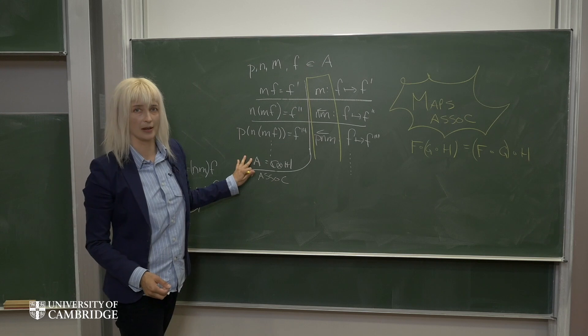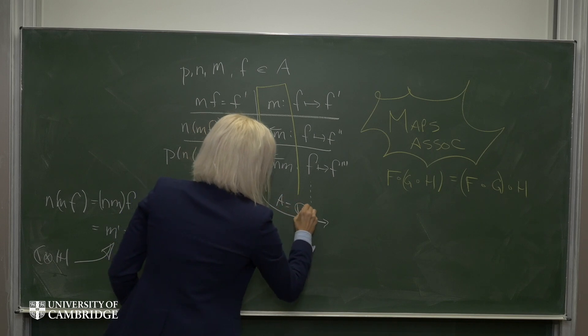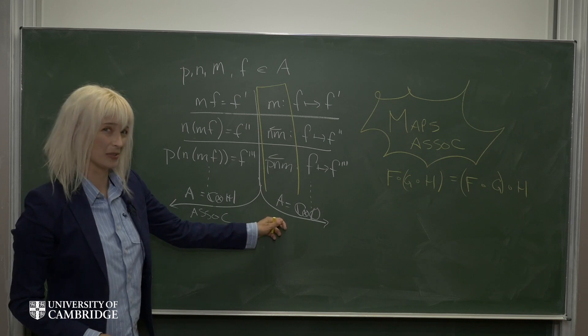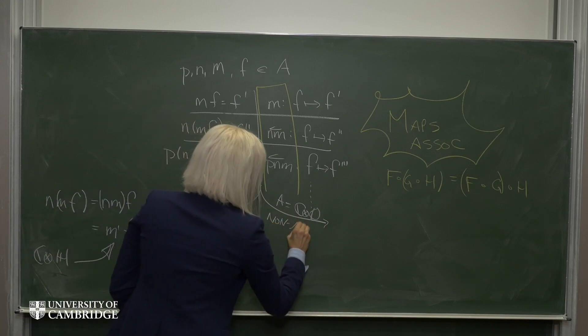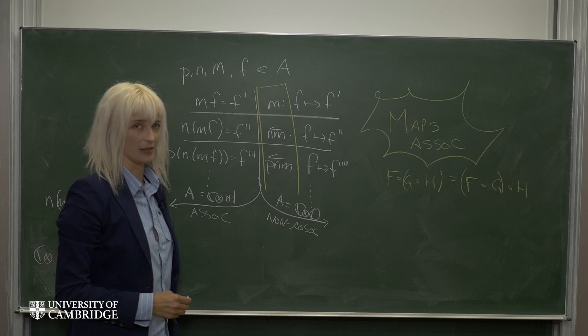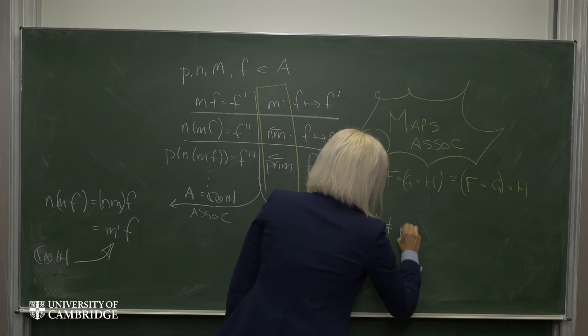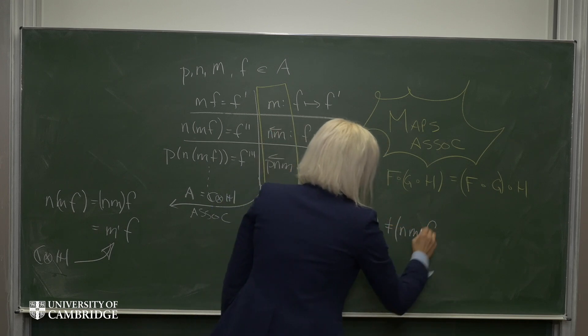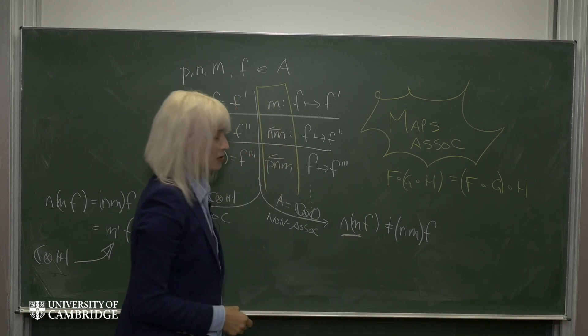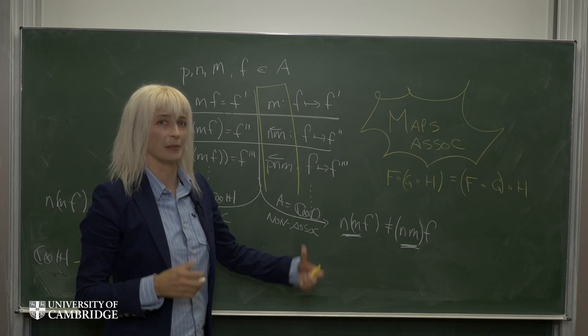But now let's see what happens instead when we take our algebra A to be the complex octonions. So as we just showed before, this algebra is non-associative. So in other words, there exists an N, an M, and an F such that these two things are not equal. So in other words, this map here is a new map from this map here. And we do get something distinct by building up the space of maps.